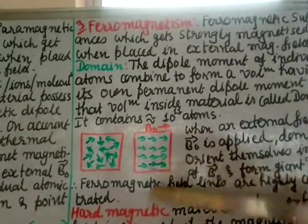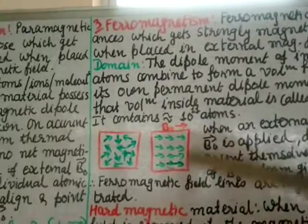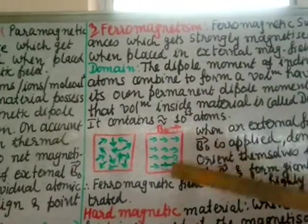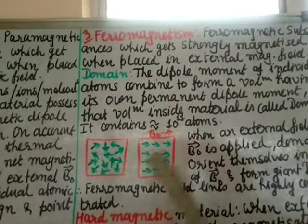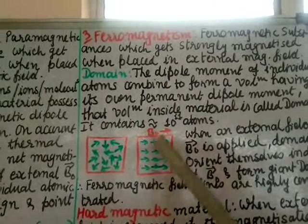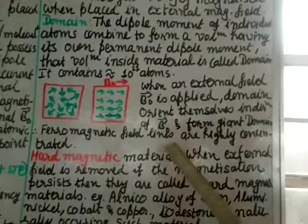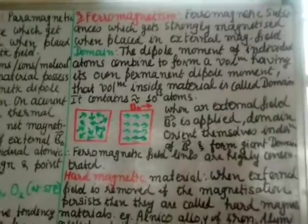Together they combine to become a giant domain, so the whole ferromagnetic substance becomes one giant domain and all the magnetic moments are in one direction — the direction of the applied magnetic field. Therefore, ferromagnetic field lines are highly concentrated, just like a strong magnet.